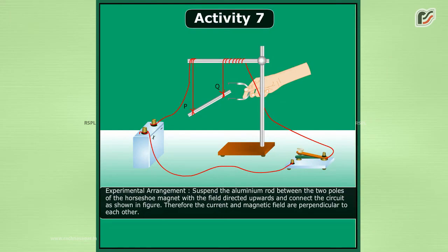Experimental arrangement: Suspend the aluminum rod between the two poles of the horseshoe magnet with a field directed upwards and connect the circuit as shown in figure. Therefore, the current and magnetic field are perpendicular to each other.